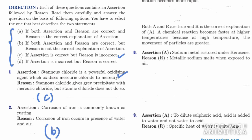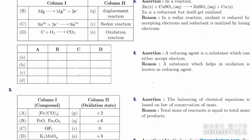Second: assertion — corrosion of iron is commonly known as rusting. Reason — corrosion of iron occurs in the presence of water and air. Both assertion and reason are correct, but the reason is not the correct explanation of the assertion. So the answer is B. Third: in the reaction Zn + CuSO4 → ZnSO4 + Cu, zinc is a reductant but itself gets oxidized. Reason — in a redox reaction, the reductant is oxidized by losing electrons. Both are correct and reason is the correct explanation, so the answer is A. Fourth: assertion — a reducing agent is a substance which accepts electrons. Reason — a substance which helps in oxidation is also known as a reducing agent. Assertion is incorrect, reason is correct, so the answer is D.